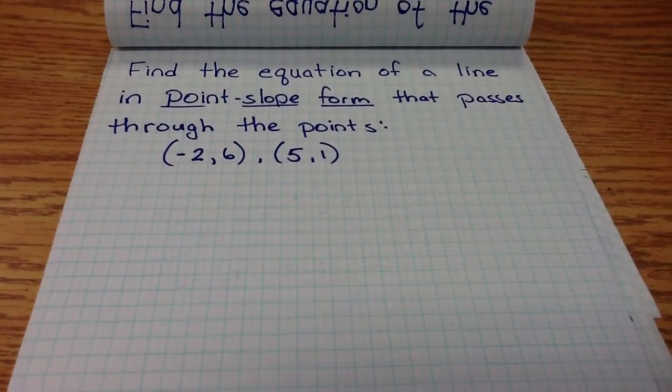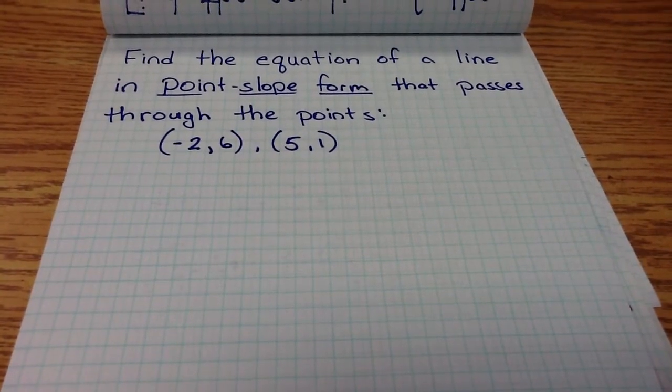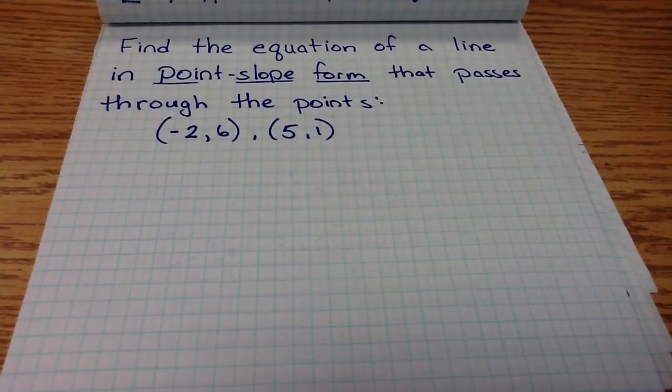In this video, we're going to find the equation of a line in point-slope form that passes through the points negative 2, 6 and 5, 1.